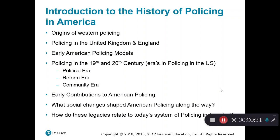We're going to talk about the following things today in this introduction to the history of policing in America: the origins of Western policing, policing in the United Kingdom and England, early American policing models, and policing in the 19th and 20th century by way of eras — the political era, the reform era, and the community era. We'll also discuss early American police and government officials who contributed to early policing models, what social changes shaped American policing, and how these legacies relate to today's system of policing in America.